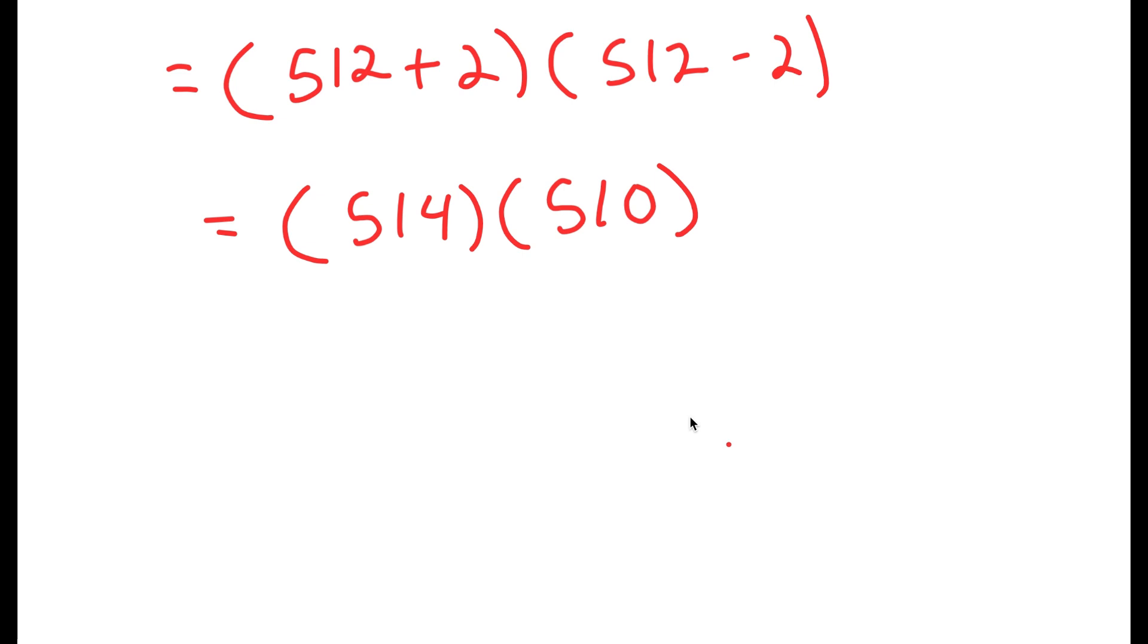Now, what most people would do from here is just simply multiply these two using the normal method. And although you would get the right answer, this takes way too long. So a simpler way of doing this is to rewrite these as 500 plus 14 times 500 plus 10. So I rewrote this as 500 plus some number because 500 is easy to multiply with.